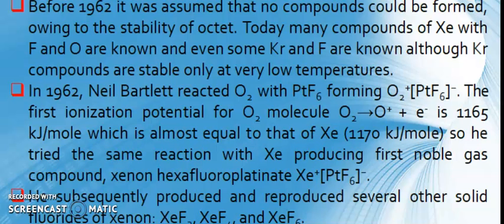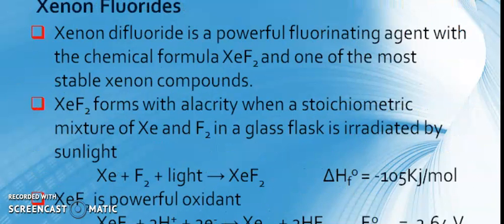In 1962, Neil Bartlett reacted O2 with PtF6, forming O2+[PtF6]-. The first ionization potential for O2 molecule, O2 to O2+ plus one electron, is 1165 kJ/mole, which is almost equal to that of Xenon at 1170 kJ/mole. So he tried the same reaction with Xenon, producing the first noble gas compound, Xenon hexafluoroplatinate. He subsequently produced several other solid fluorides of Xenon: XeF2, XeF4, and XeF6. In solvents like anhydrous HF, he was able to prepare the first equivalent noble compounds.